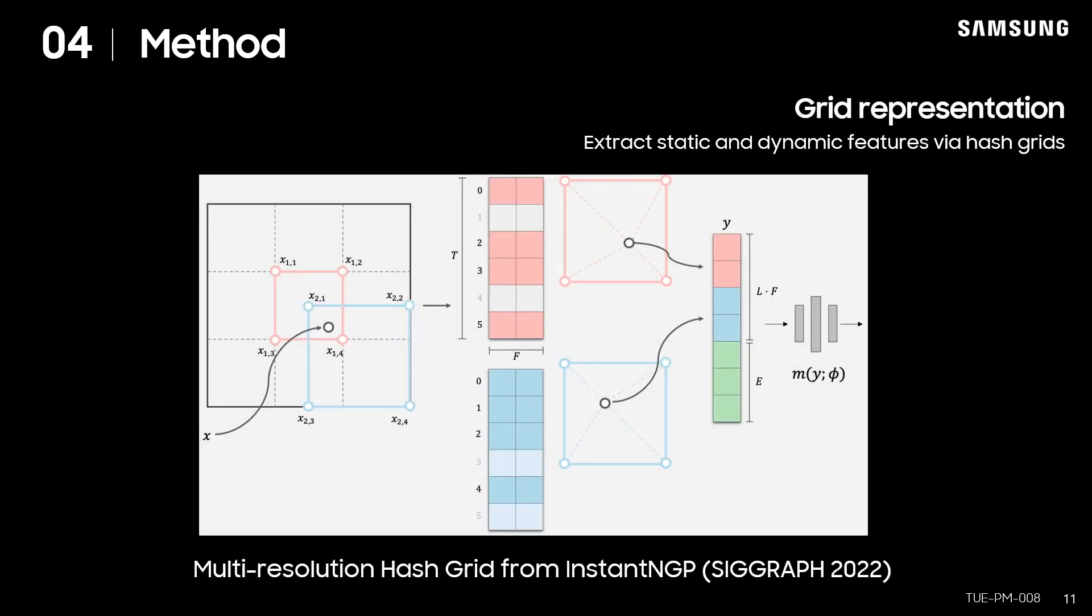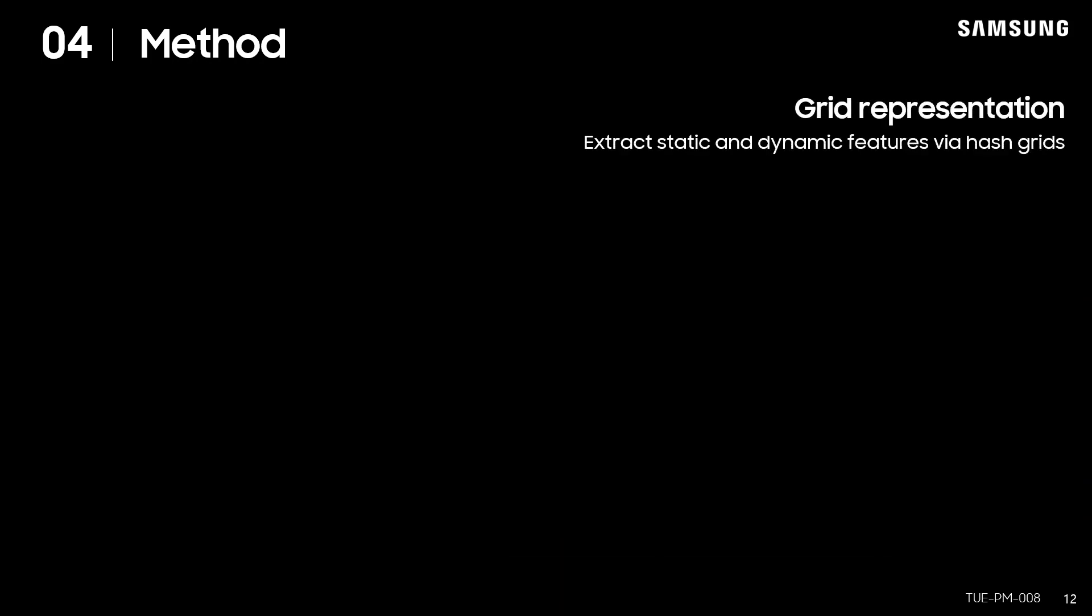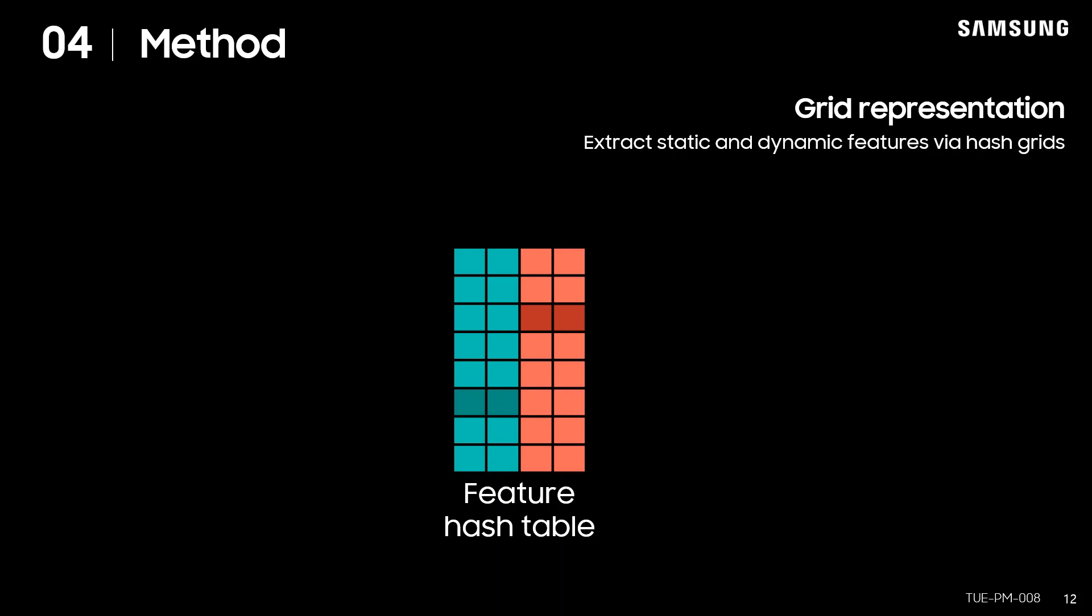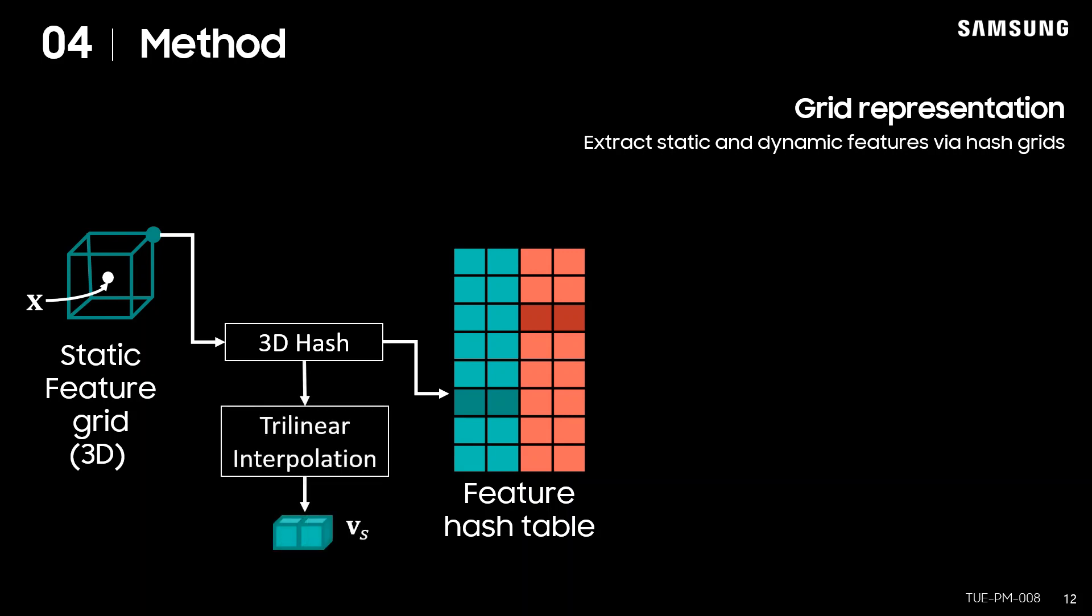On the other hand, for the grid representation, we adopted the feature extraction method from Instant NGP. It has multi-resolution 3D grids and each grid point contains feature vector which can be retrieved via hash function. Our feature hash table is divided into two parts, for static features and for dynamic features. For the static features, given the 3D query point X, the features of adjacent 8 grid points are retrieved through 3D hash functions, and the feature vector is calculated by trilinear interpolation, which is the same as Instant NGP.